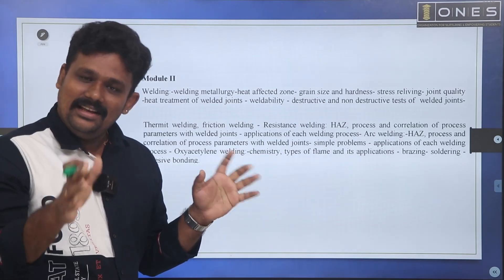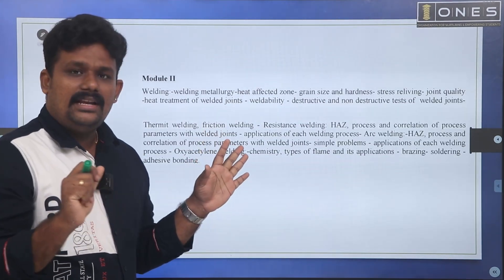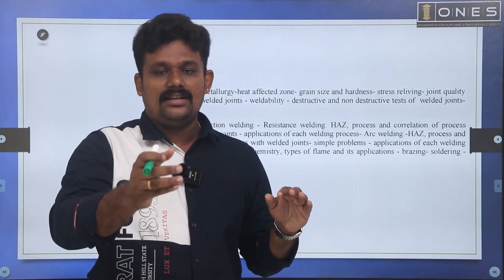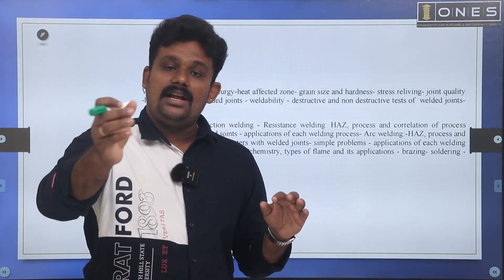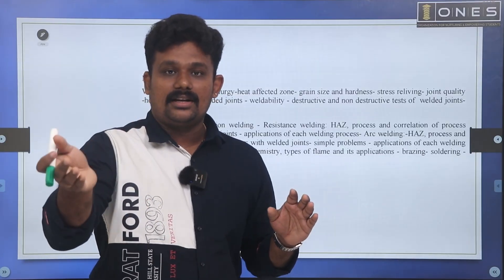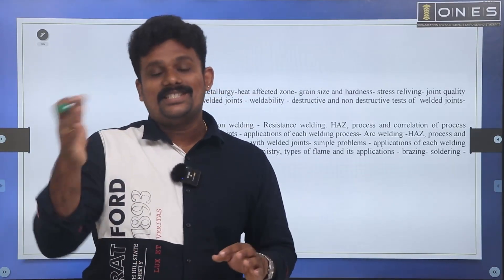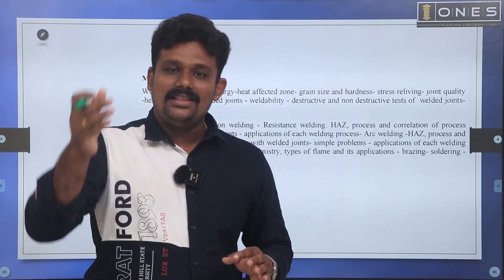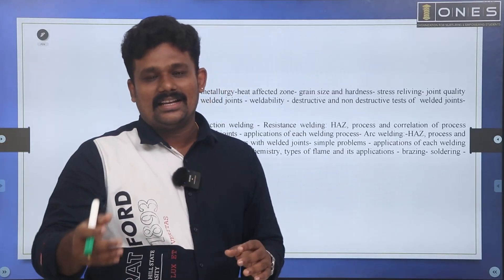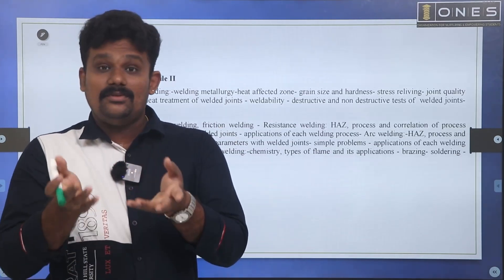Resistance welding is also covered. Welding is a full chapter. We will discuss gas welding. Arc welding has subclassifications: shielded metal arc welding, TIG, and MIG. Resistance welding includes spot welding and seam welding. Special welding techniques include fusion welding and thermit welding.